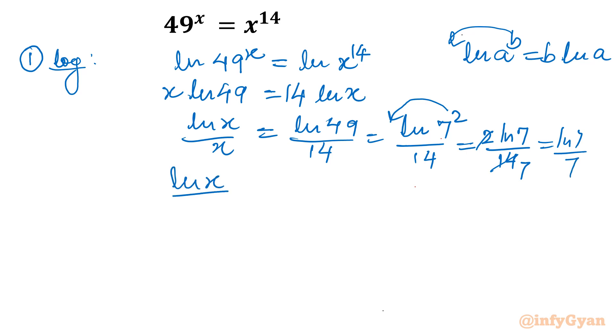Let me write here ln x over x equal to ln 7 over 7. Now by comparing both sides, I can conclude x is 7. So using ln log, x equals 7. Let's take second method.